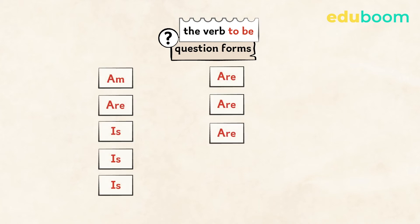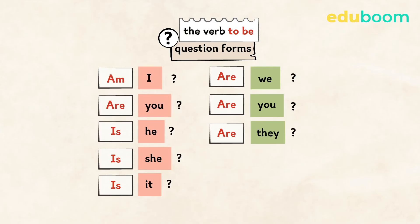Okay, so how to make a question with the verb to be. Just start the sentence with the form of the verb to be, and then add the personal pronoun. Am I, are you, is he, is she, is it, are we, are you, are they?